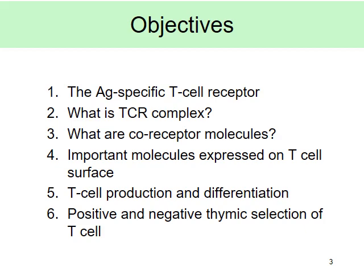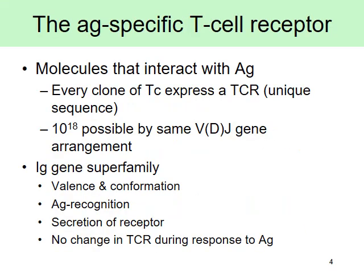What is the TCR complex and what are co-receptor molecules — that's where most of the emphasis is. Your challenge will be getting confused about which molecules are on B cells versus T cells. We'll also talk about T cell production and the terms negative and positive selection. Let's begin: the T cell receptor is a receptor that talks with an antigen.